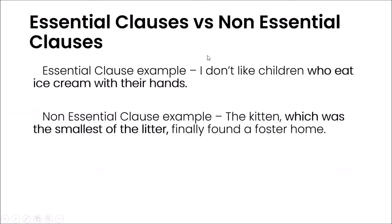We have two types of clauses: essential clauses and non-essential clauses. For cases where the sentence wouldn't hold the same meaning without the clause, the adjective clause is called an essential clause. For example, 'I don't like children who eat ice cream with their hands.' The adjective clause gives essential information to describe which children the speaker doesn't like. If you got rid of that clause, the sentence would simply say 'I don't like children', which is very different. One quick way to pick out an essential clause is that it does not require any additional punctuation.